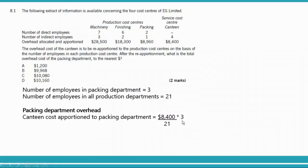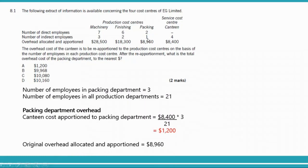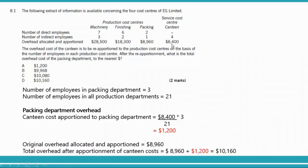The packing department's original allocated overhead was $8,960, and the $1,200 reapportioned overhead comes from the service department. Therefore, the total overhead for the packing department is $8,960 plus $1,200, which equals $10,160.